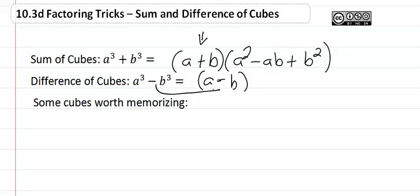Notice that these two match and these two match. So we square the first term, we're going to do opposite sign A times B plus square of the last term.